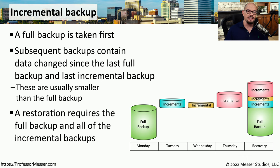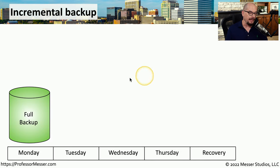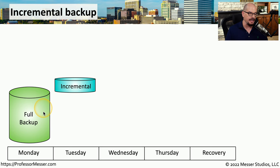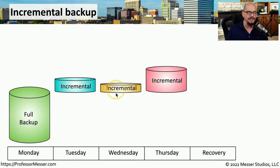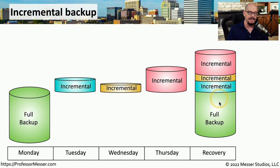The restoration process for incremental backup is very different than the differential, because you not only need the last full backup, you need each incremental backup that has occurred since that last full backup was made. So if we implemented an incremental backup, we would take our full backup on Monday morning. On Tuesday morning, we would only copy the information that has changed since that last full backup. On Wednesday, we would only copy information that has changed since Tuesday. On Thursday, we would only copy information that has changed since Wednesday. If we need to recover the entire system, we would need the full backup, Tuesday's incremental, Wednesday's incremental, and Thursday's incremental backup, putting them all together to create the full restore.